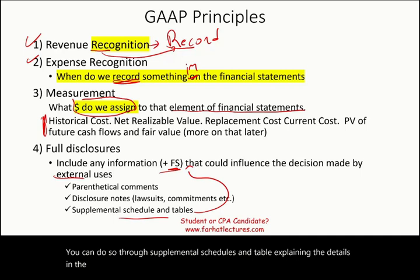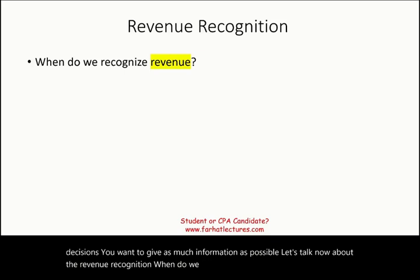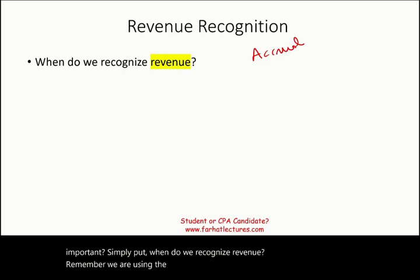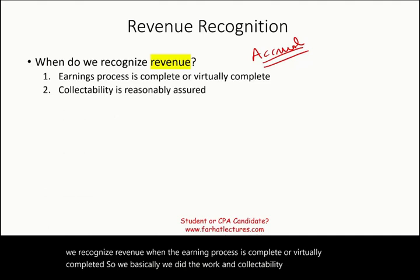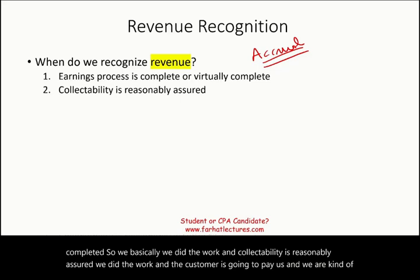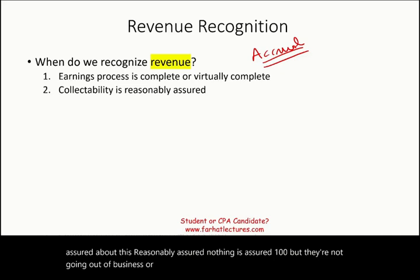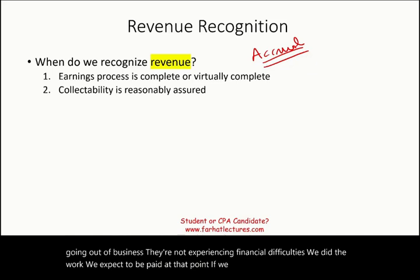Additional disclosure helps users make better decisions, so you want to give as much information as possible. Now let's talk about revenue recognition — when do we recognize revenue? We are using the accrual method. We recognize revenue when the earning process is complete or virtually complete and collectability is reasonably assured. We did the work, the customer is going to pay us, and we are reasonably assured of that. At that point, we can recognize revenue even before we get paid.